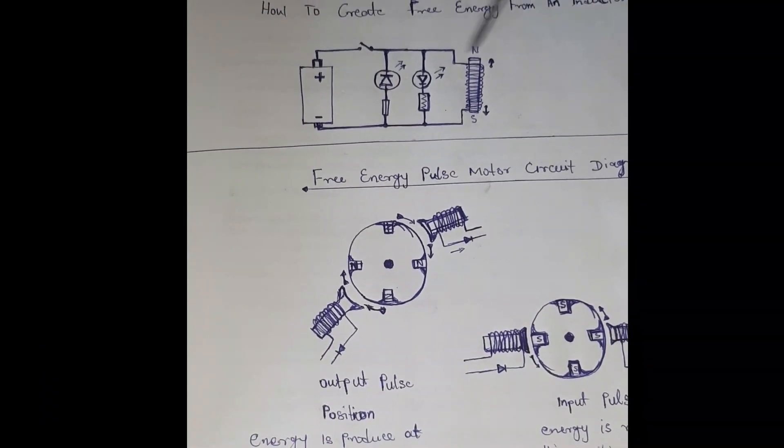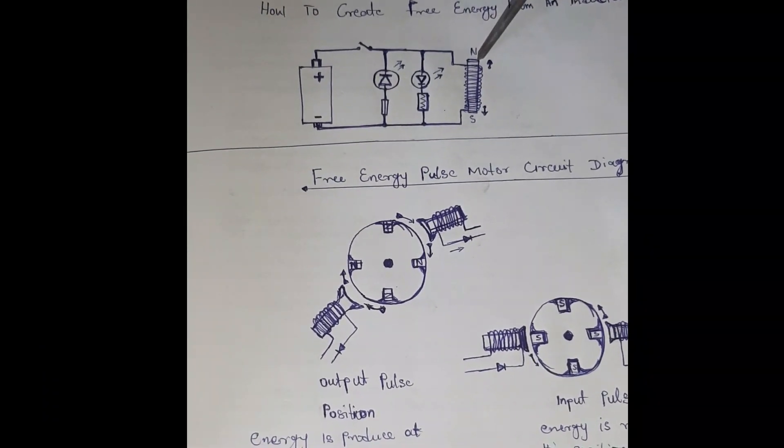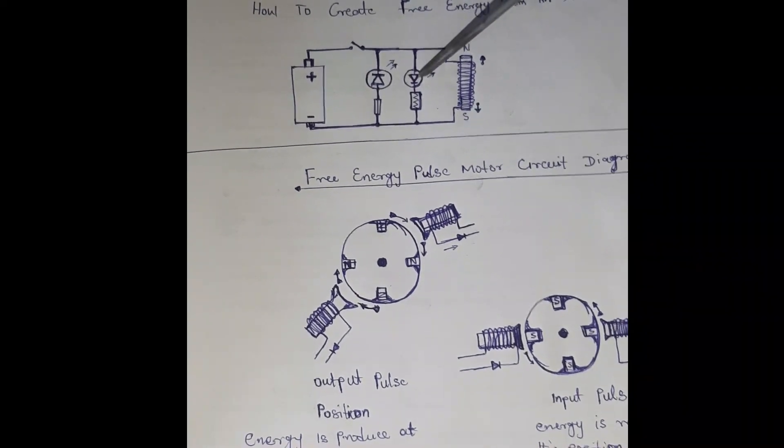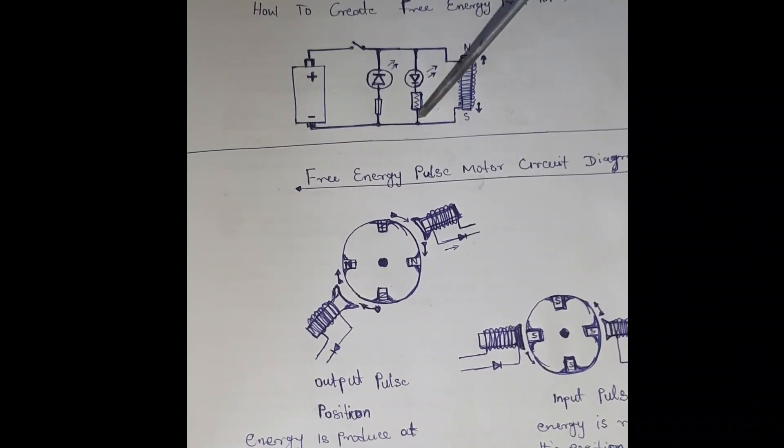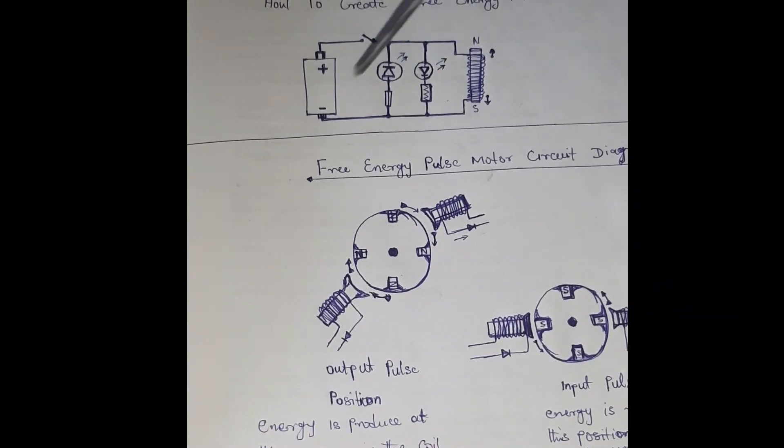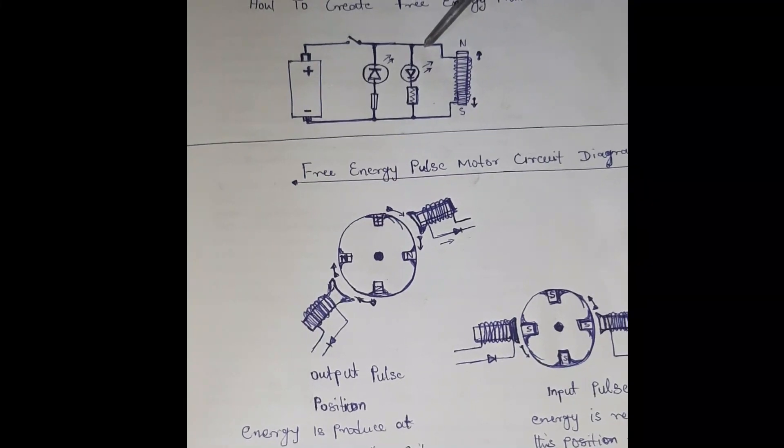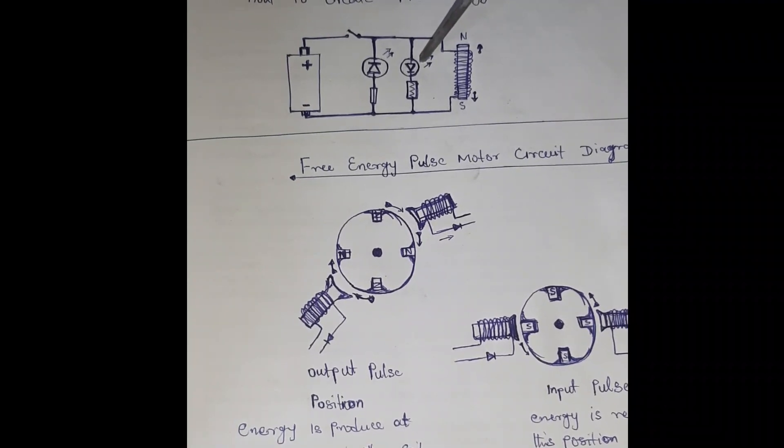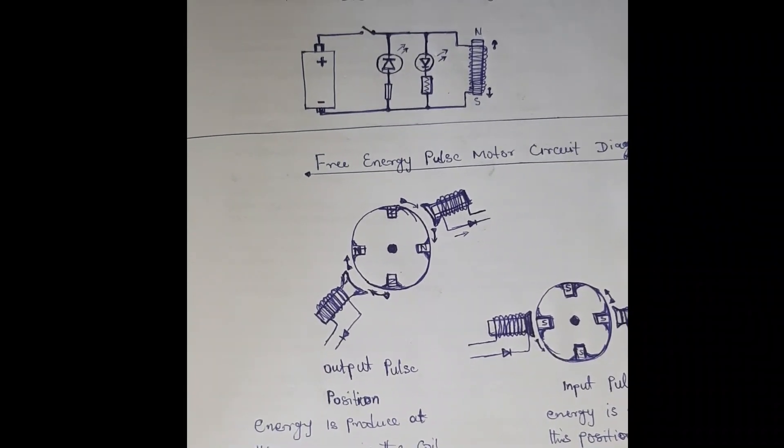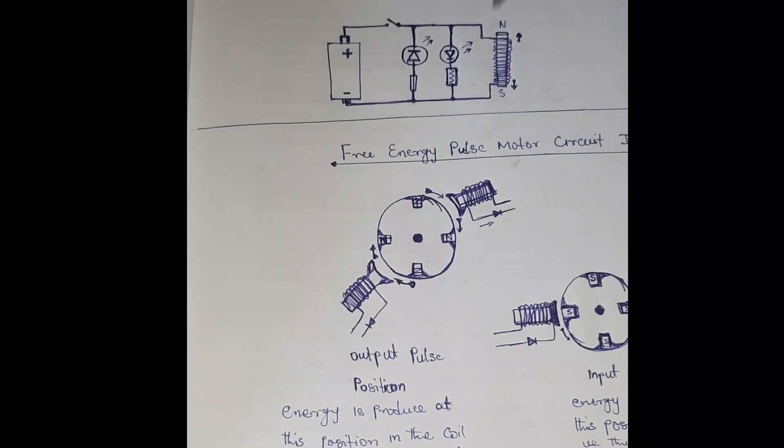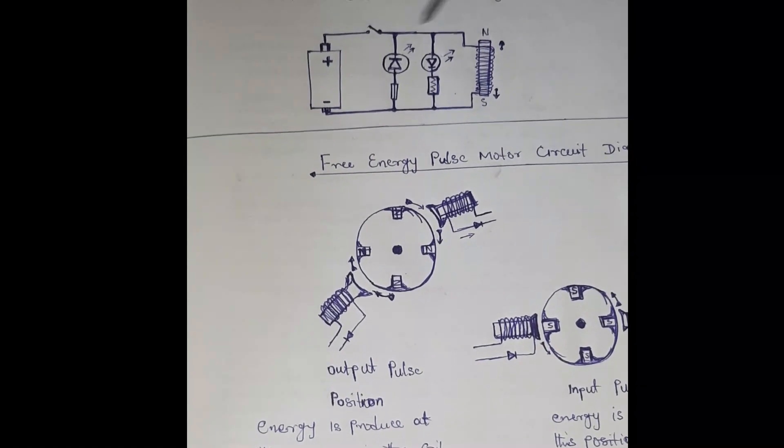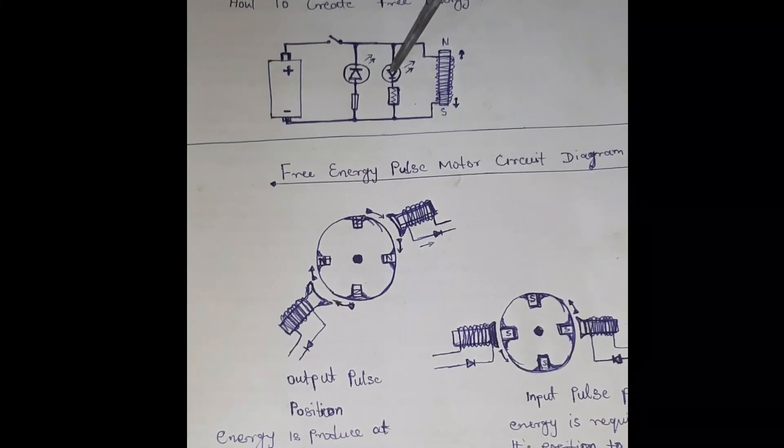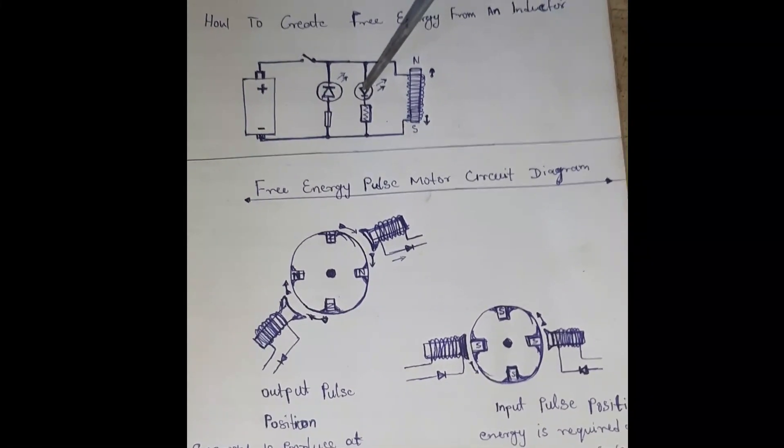Now this other LED bulb is reverse biased. That means when you connect this switch, this bulb will not light. But when you release the switch, when this switch is off, a reverse back flow EMF will now supply light to this bulb and this bulb will light.